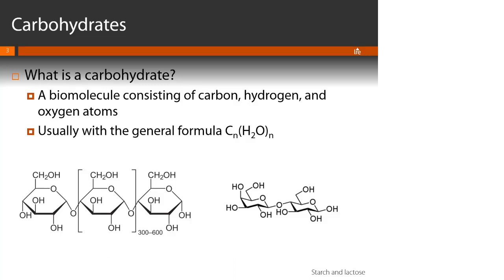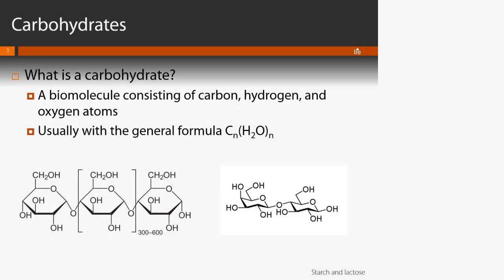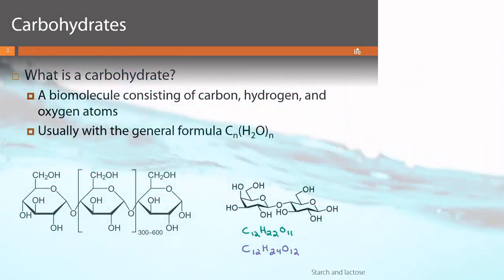Go ahead and pause this video and give me a molecular formula for the lactose molecule on the right. Our lactose molecule has 12 carbons, 22 hydrogens, and 11 oxygens — so it's not quite a 1:2:1 ratio. For a true 1:2:1 ratio we would need C₁₂H₂₄O₁₂, so we're missing two hydrogens and an oxygen.